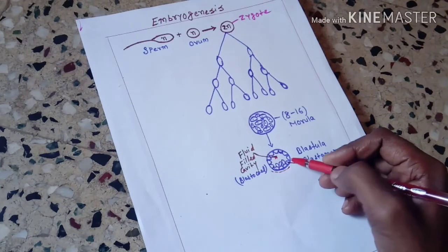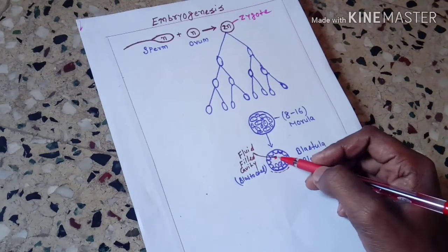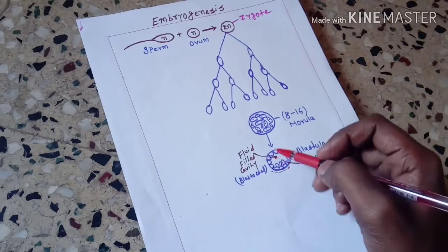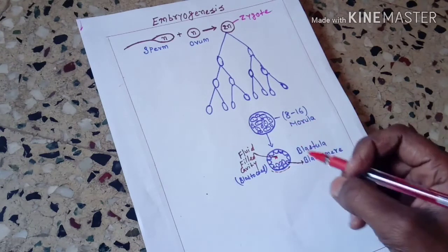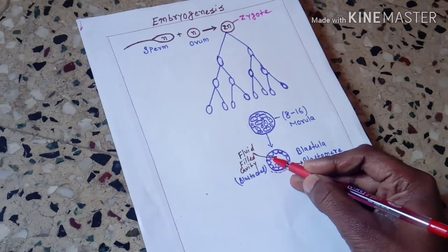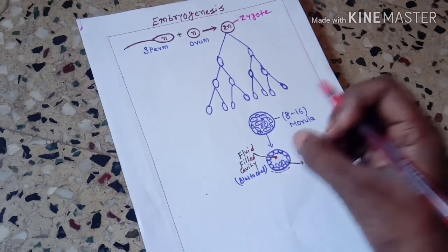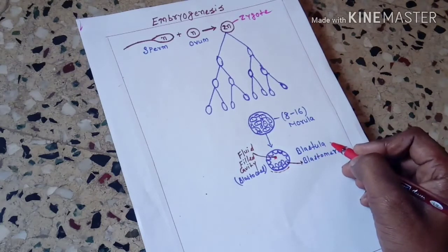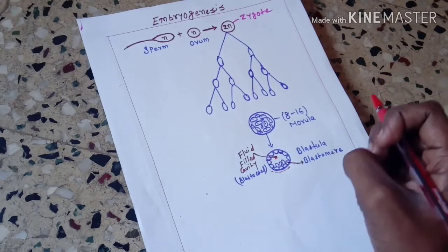After arranging, a cavity appears — you can clearly see there is a cavity here. This hollow cavity in the middle is called the blastocoeel — it is a fluid-filled cavity. Each of the cells arranged around it is called a blastomere. This whole structure is called blastula, or also called blastocyst.